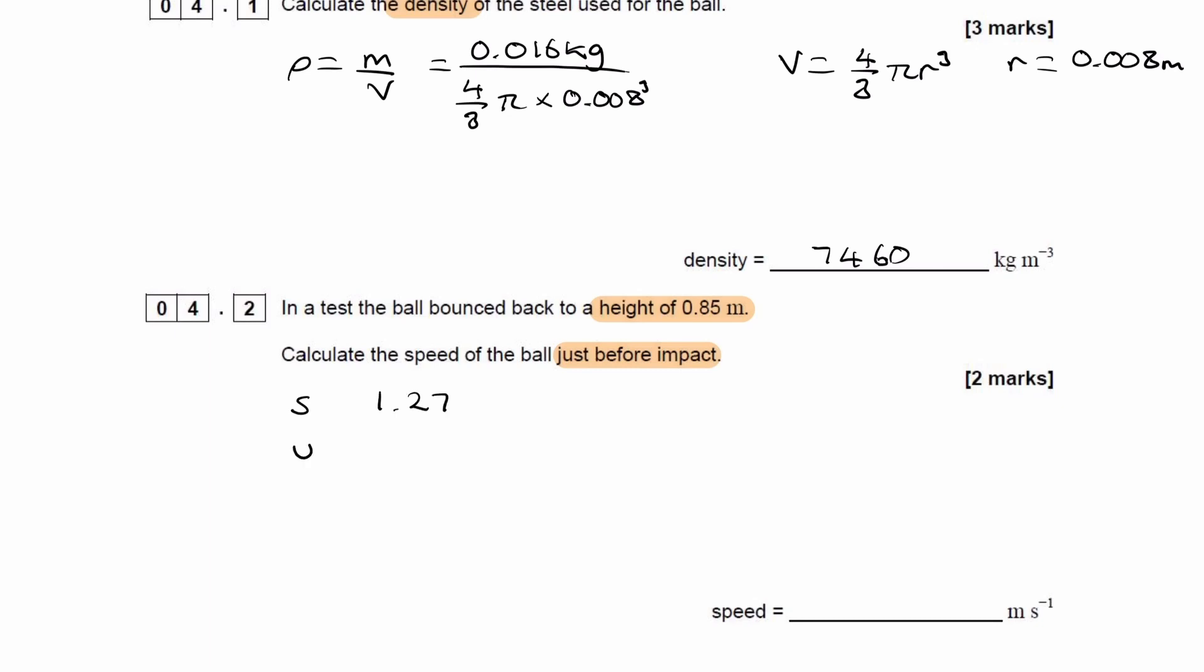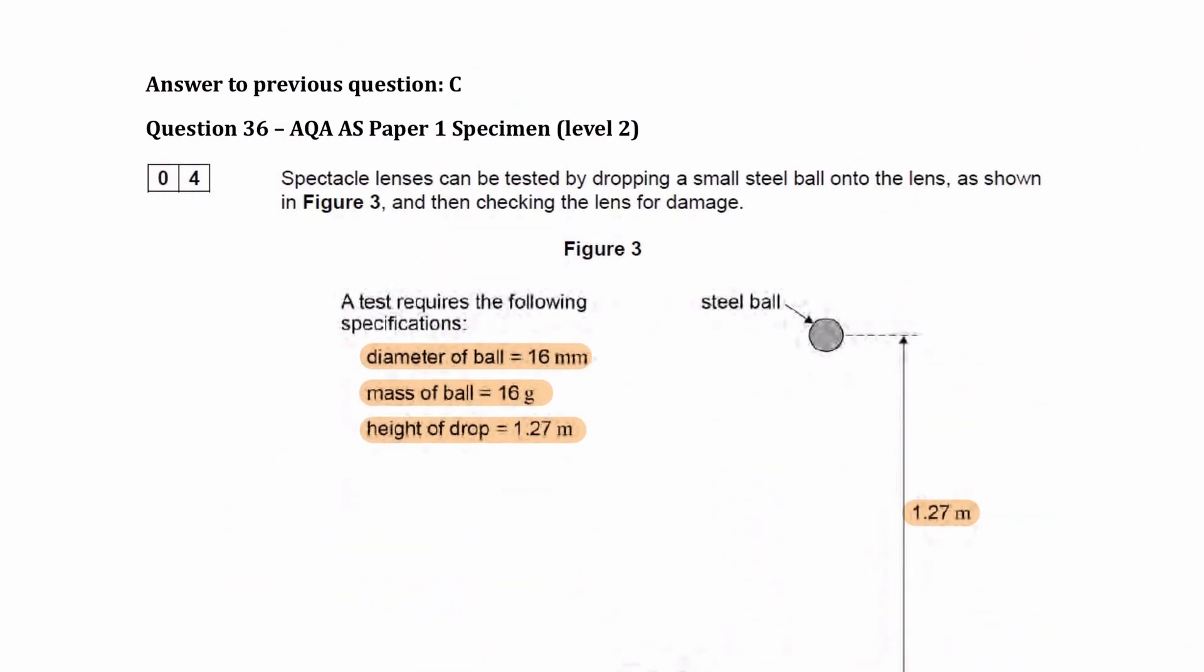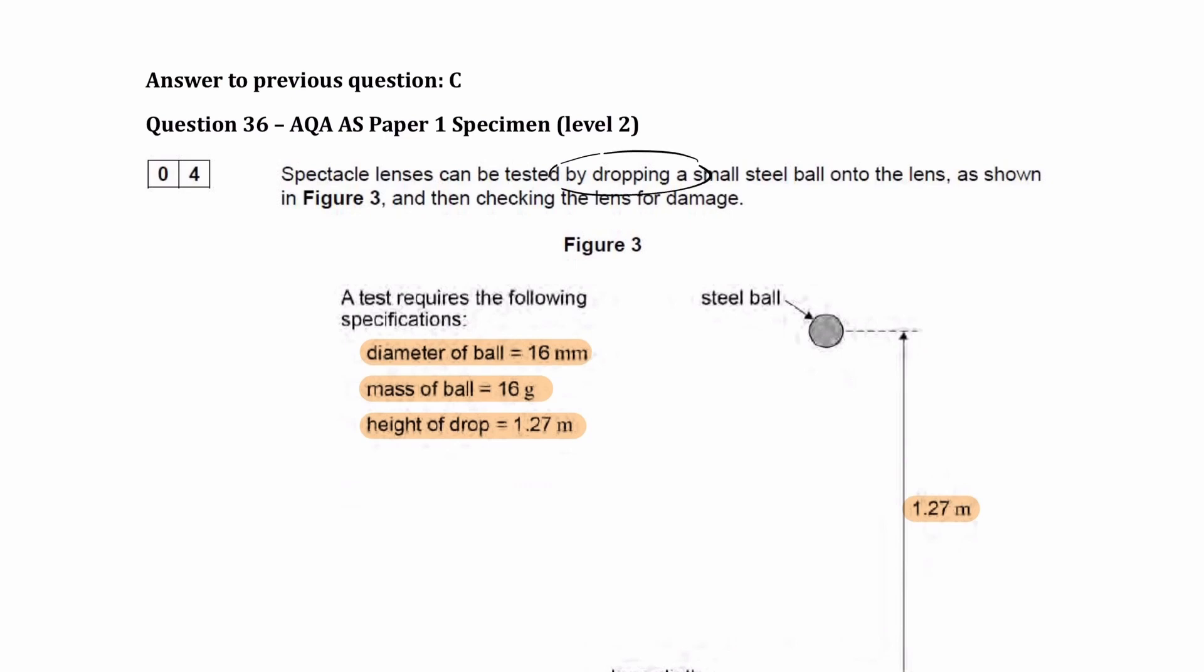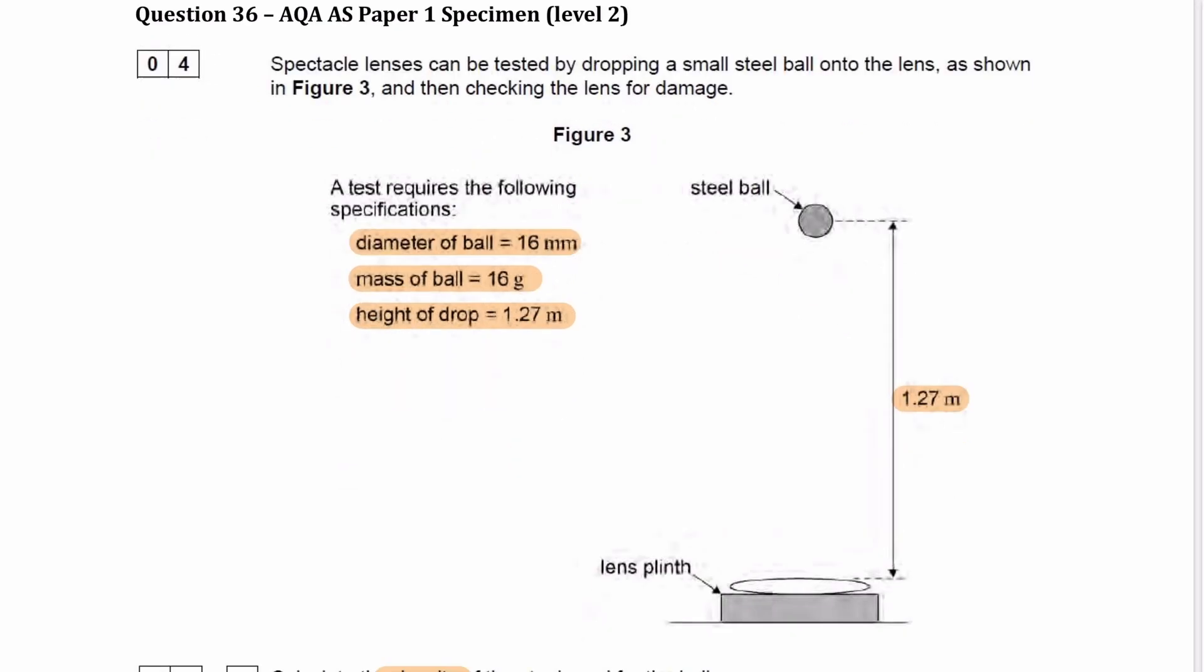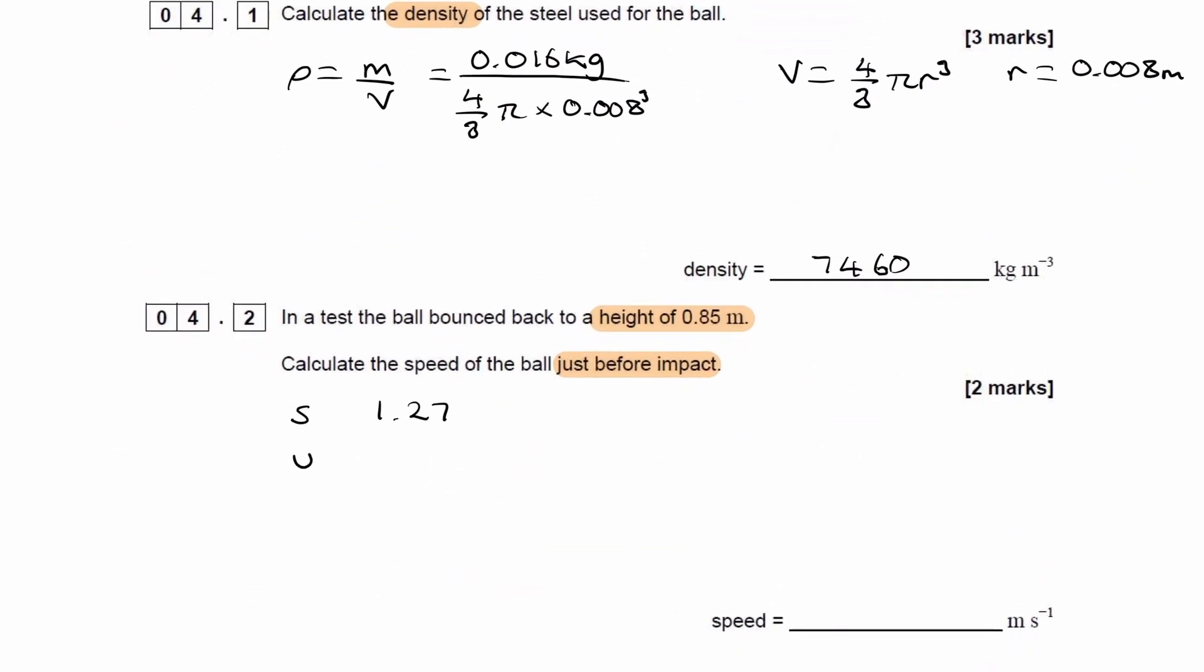It says in the question that it's just dropped. It says that over here, it's just dropped. It's not thrown down or projected down. It's just dropped. So then the initial speed would be 0. So the reason that I'm using SUVAT is because in this scenario, we have constant acceleration. It's in freefall. The acceleration would just be 9.81 downwards. So let's say the downwards direction is positive. A is then 9.81 positive.